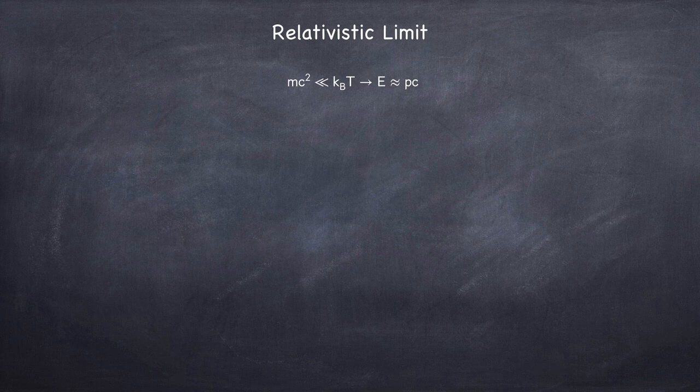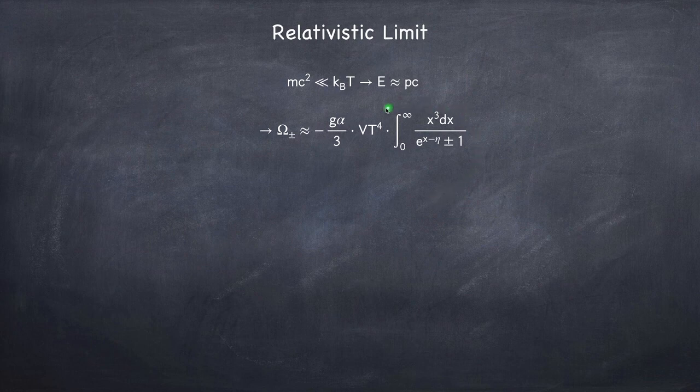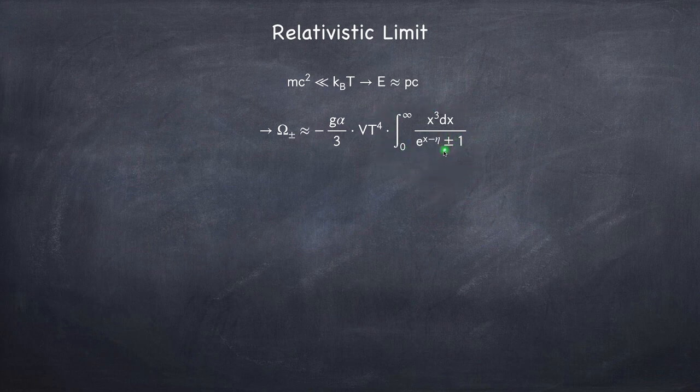In the relativistic limit, the Landau potential will reduce to the following integral. This integral is called the Bose or the Fermi integral. If it's a minus, it's a Bose integral. If it's a plus, it's a Fermi integral.